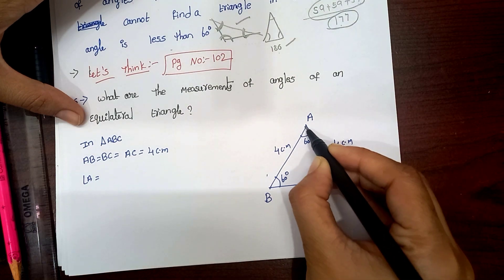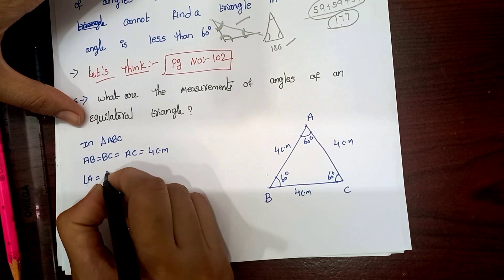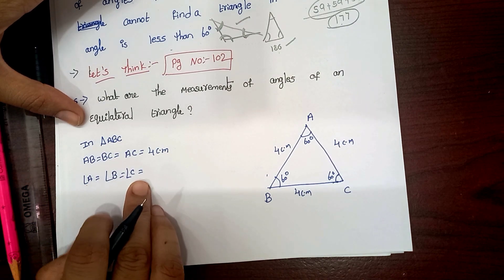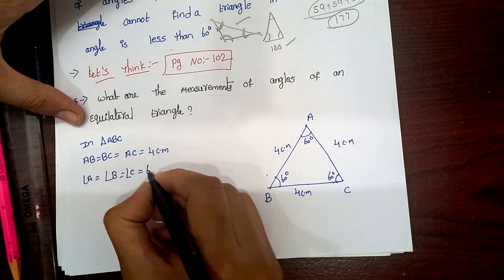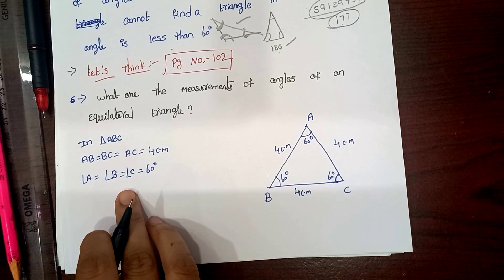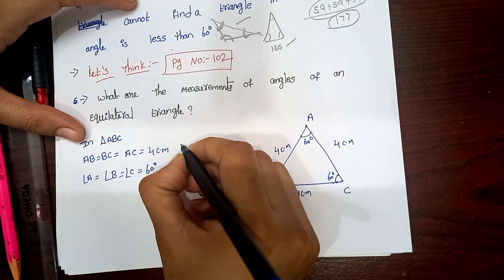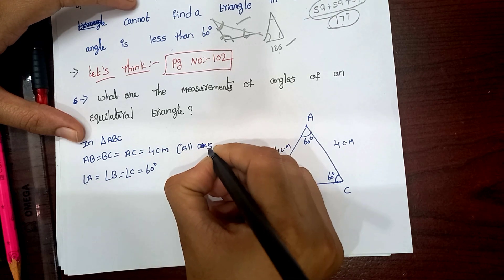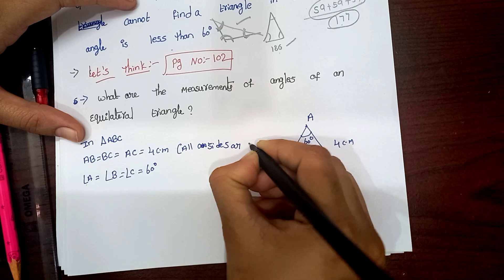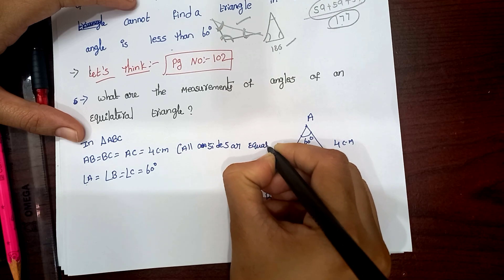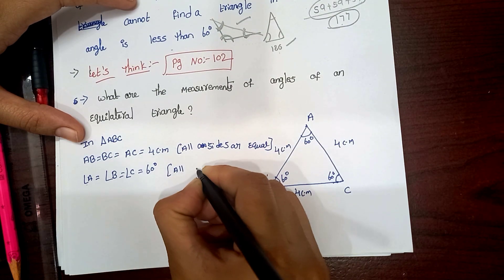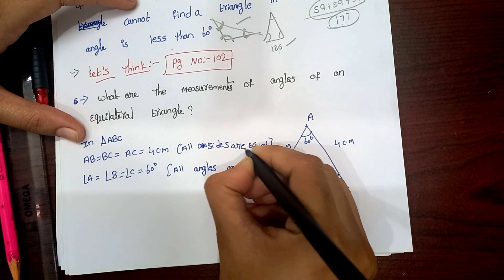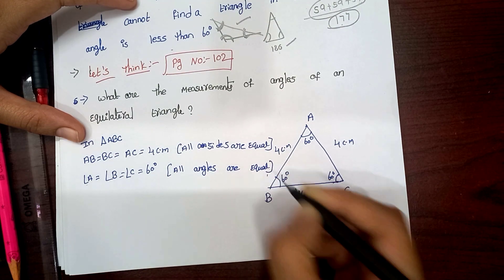Angle A, angle B, angle C — these three angles are equal. Angle A equals angle B equals angle C. All sides are equal. All angles are equal.